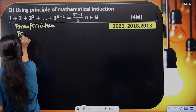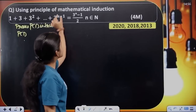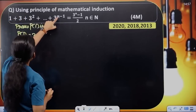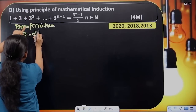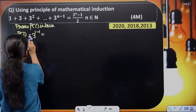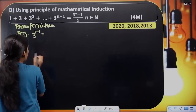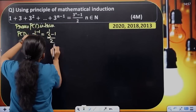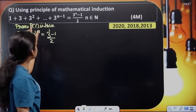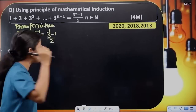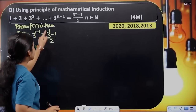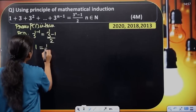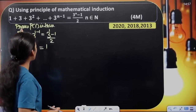So here, P of 1: LHS equals RHS. LHS equals 1. RHS equals 3 raised to 1 minus 1 by 2, which equals 3 minus 1 by 2, equals 2 by 2, equals 1. So LHS equals RHS, and we prove P of 1 is true.